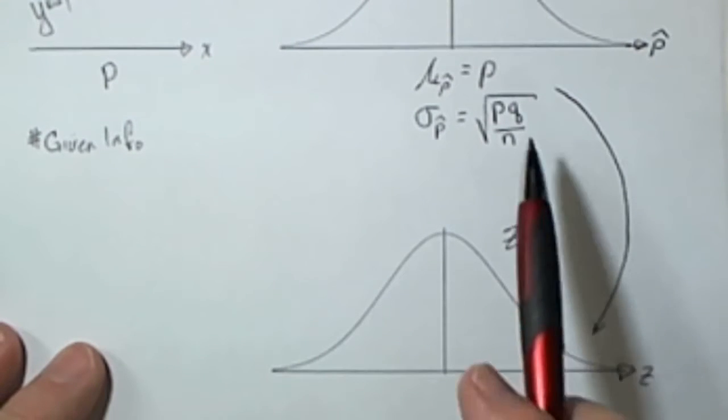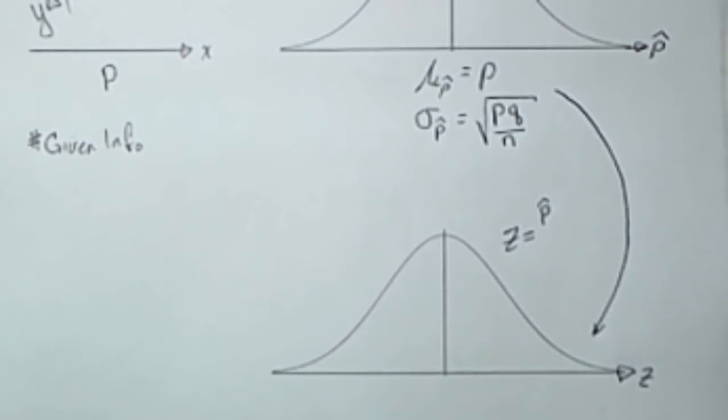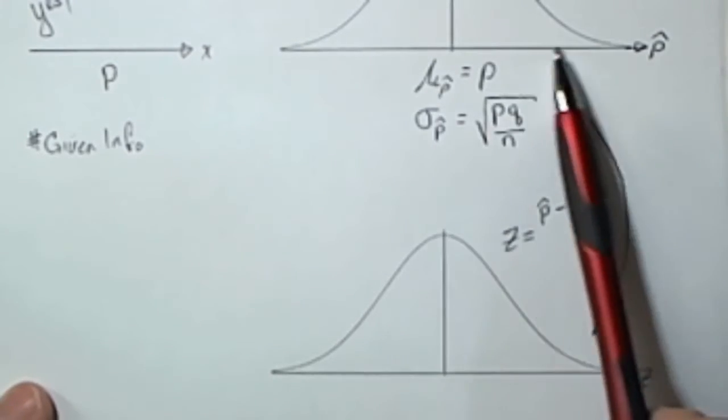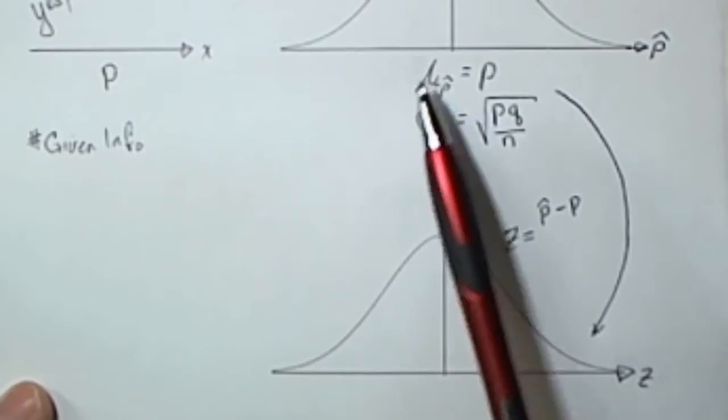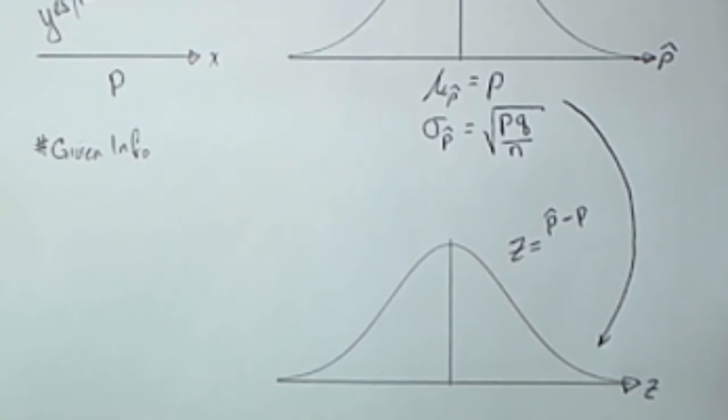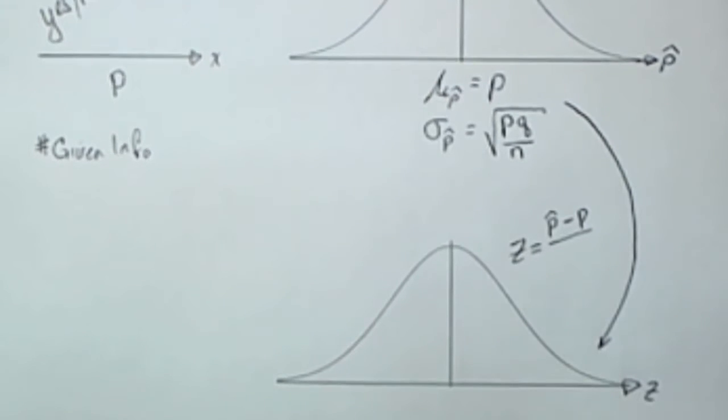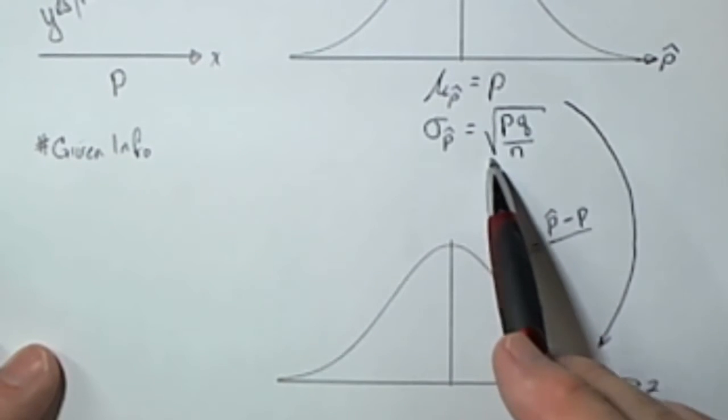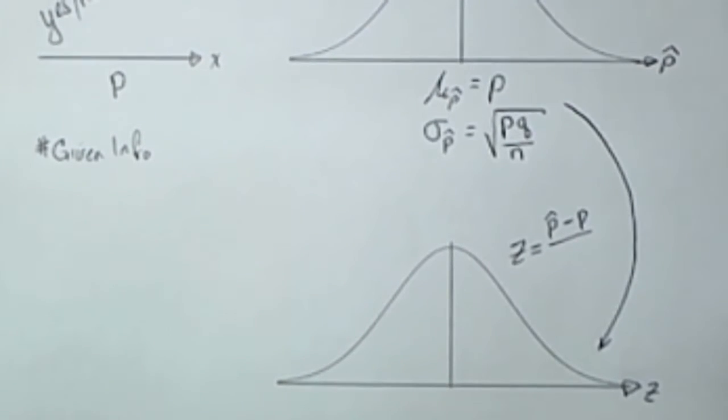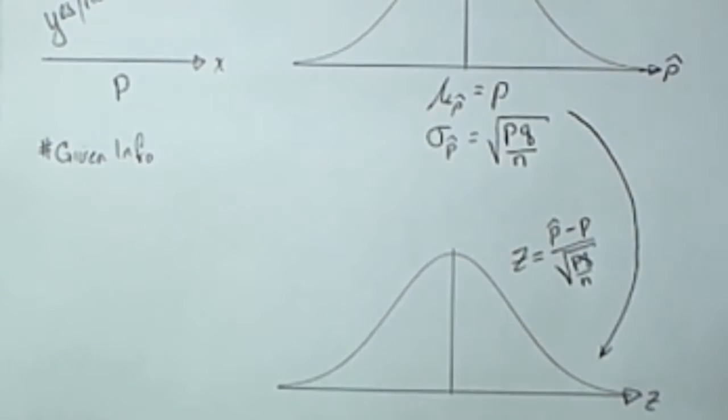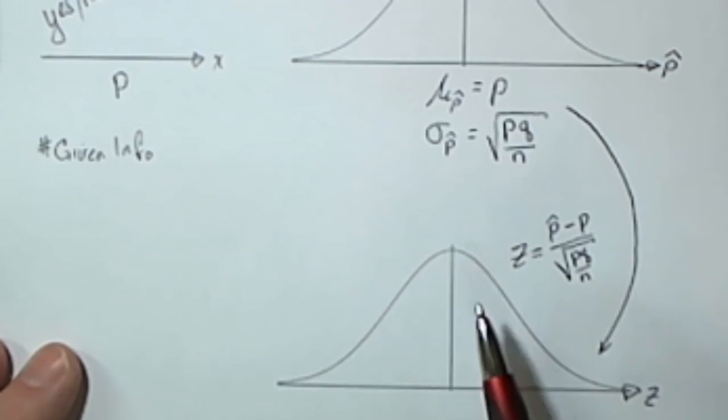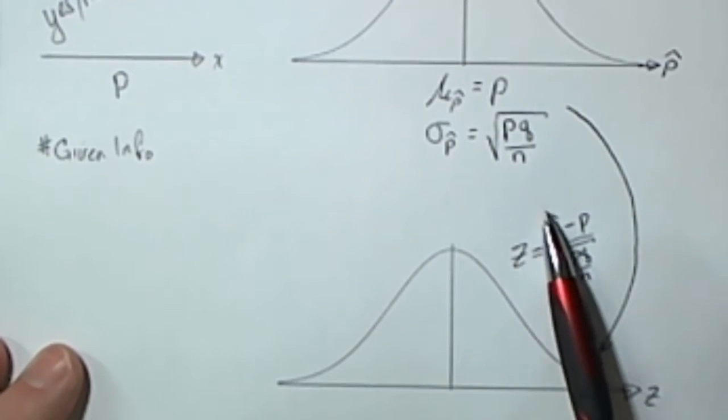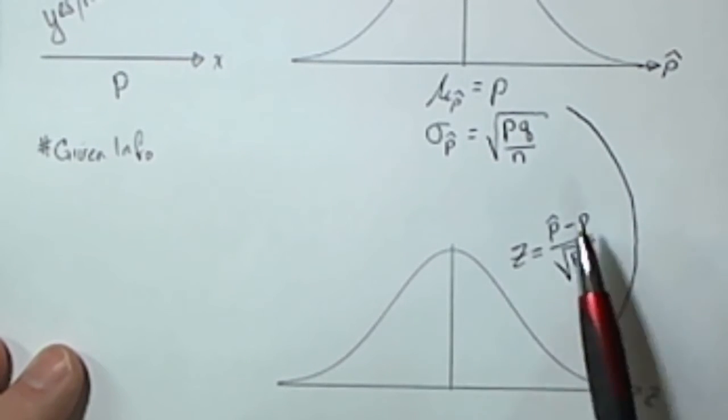If we wanted to find the Z score of a particular P hat, we would take P hat minus the mean of the population that we're in. What that's doing is telling how far P hat is away from the mean. And all of that is divided by this standard deviation. So literally the Z score is telling how many standard deviations a particular value is away from the mean.